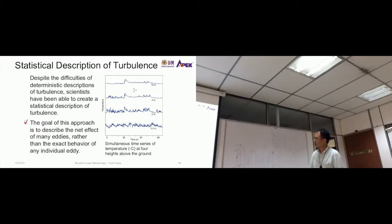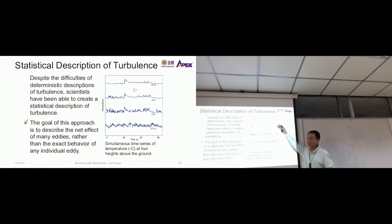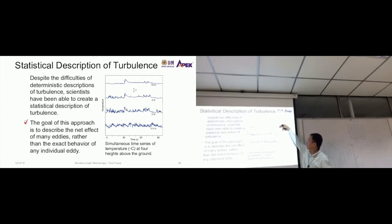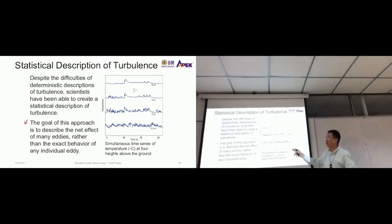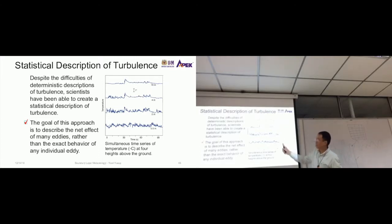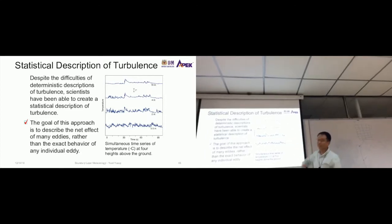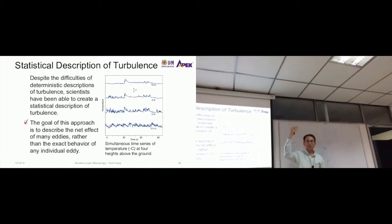This is a simultaneous time series of temperature at four heights above the ground. The characteristic of turbulence is different depending on the height. Close to the ground, there's a lot more variation; higher up, there's less variation. A temperature sensor close to the ground measures more turbulence and more eddies due to friction, while above there are bigger-sized eddies with less variation. You can try this yourself with multiple thermometers at different heights.